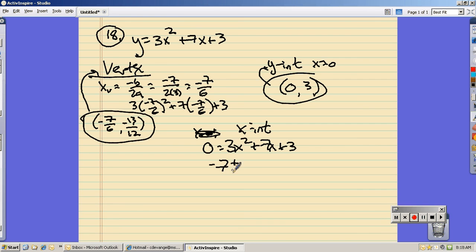Negative b plus or minus the square root of b squared minus 4 times a times c all over 2 times a is negative 7 plus or minus the square root of 49.